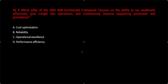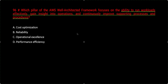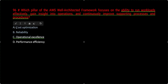Question 96: Which pillar of the AWS Well-Architected Framework focuses on the ability to run workloads, gain insight into operations, and continuously improve supporting processes and procedures? By now you should know this is Operational Excellence. Reliability is about handling failures automatically. Performance Efficiency is about efficient resource use. Cost Optimization covers cost-related concerns. Operational Excellence covers running workloads and continuously improving operations.